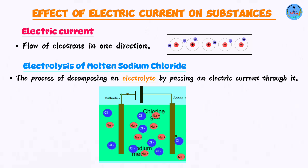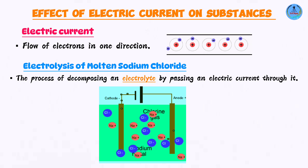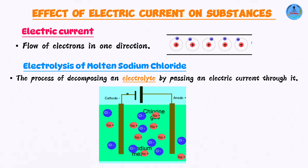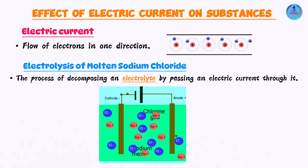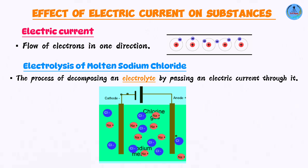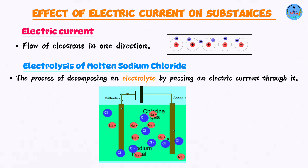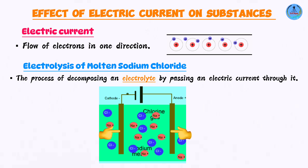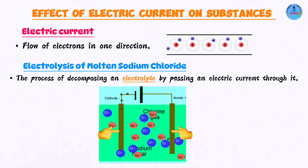If we were to pass an electric current through this, number one, it's going to conduct the electric current because it has mobile ions. Number two, it's going to undergo chemical decomposition — it's going to break down. So this whole process is what is termed as electrolysis. We also have electrodes.